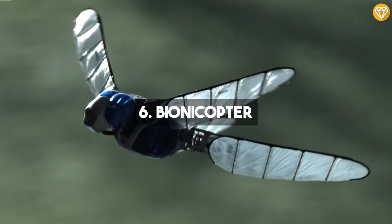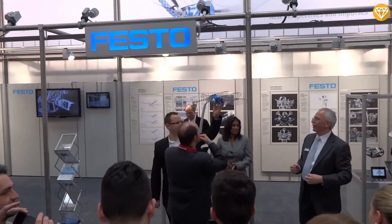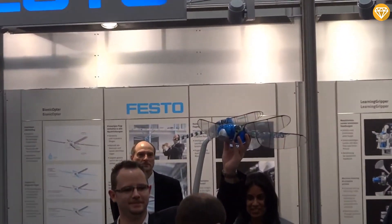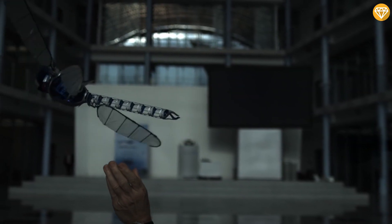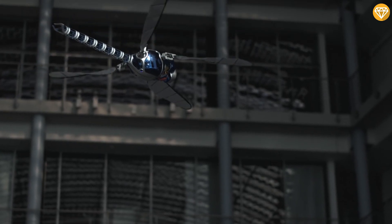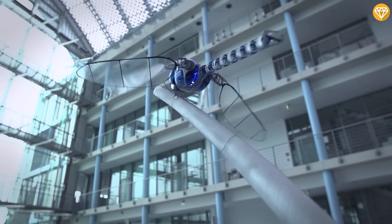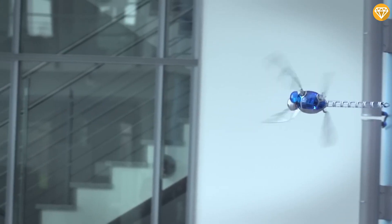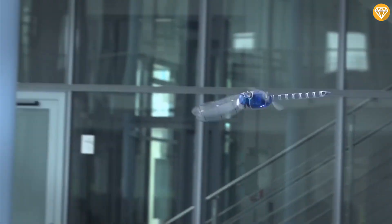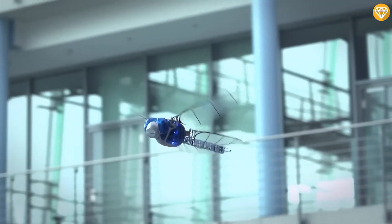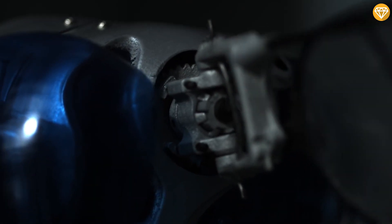Number 6, Bionic Opter. The Bionic Opter, developed by the Bionic Learning Network, is a remarkable aircraft that mimics the intricate flight capabilities of a dragonfly. Weighing only 175 grams and boasting a wingspan of 63 centimeters, this ultralight artificial dragonfly can maneuver in any direction, hover in place, and glide without wing flapping.